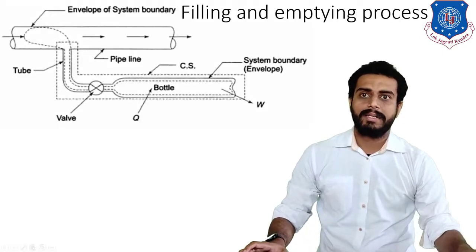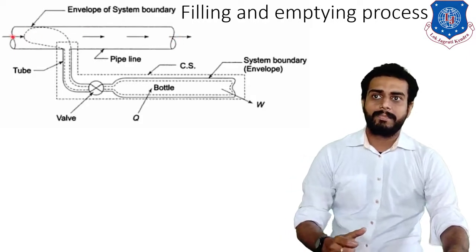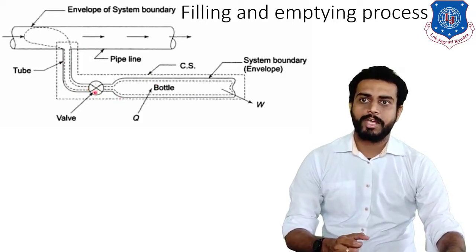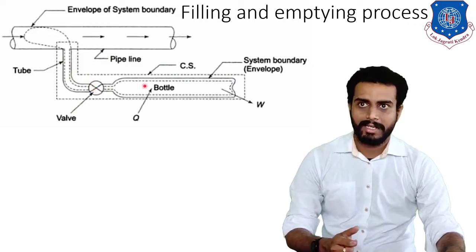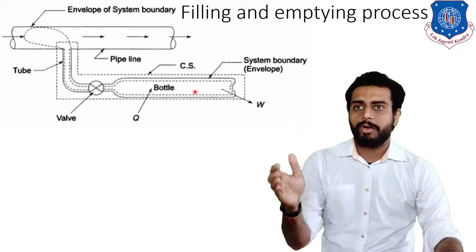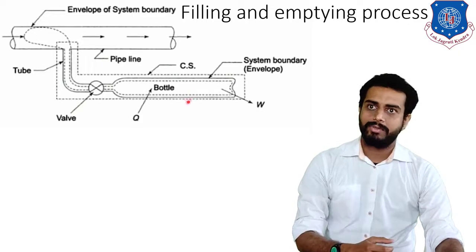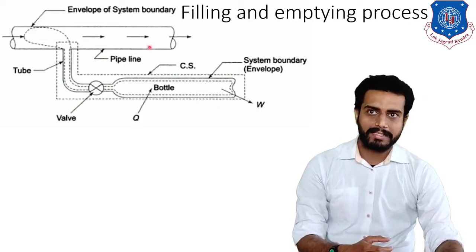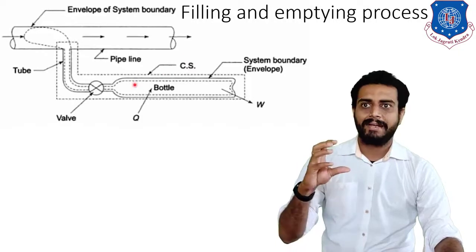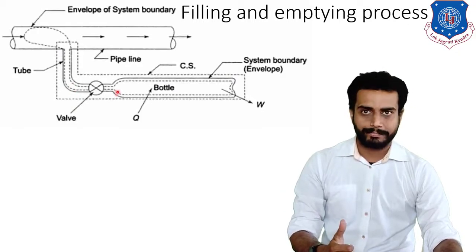In order to understand the concept, let us consider the given diagram on the screen. We have one pipeline in which some gas is flowing, and this pipeline is connected to a bottle through a tube. We also have one valve in order to control the flow of this gas into the bottle. The pipeline is having a larger diameter compared to the bottle.